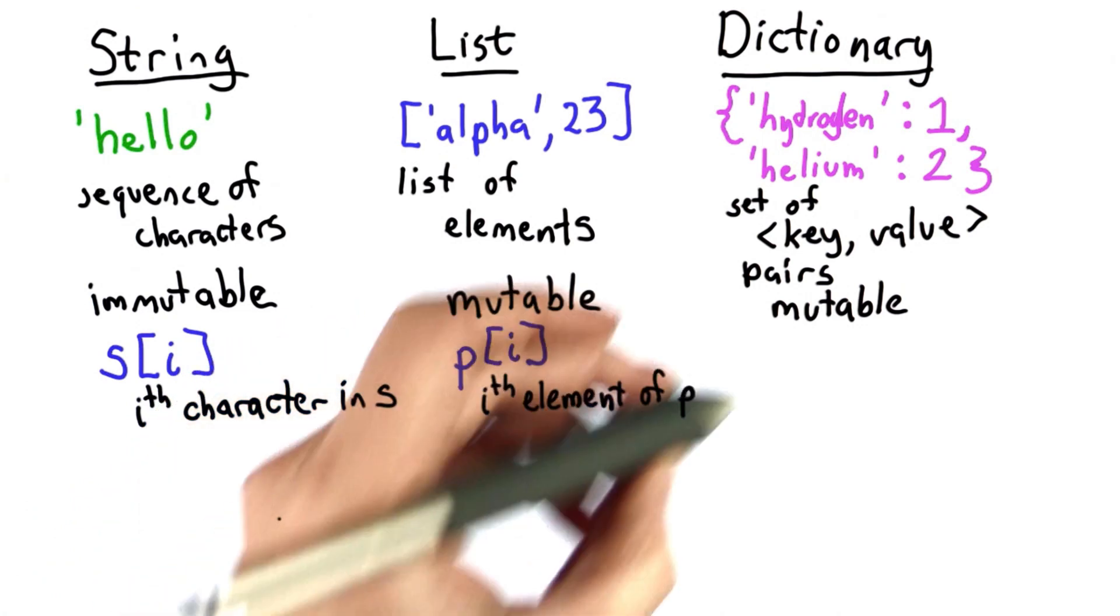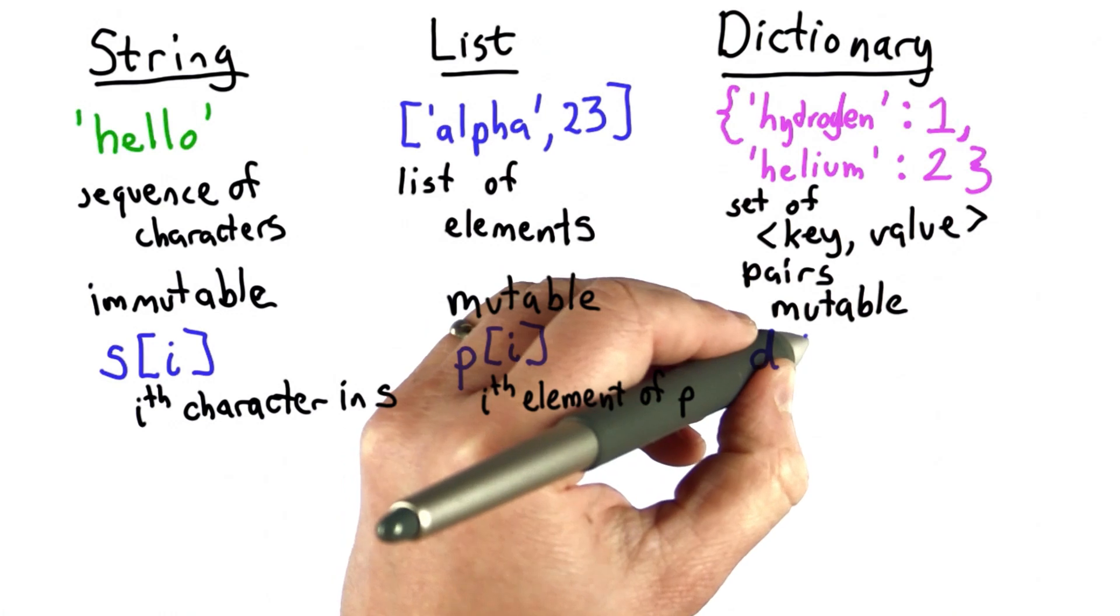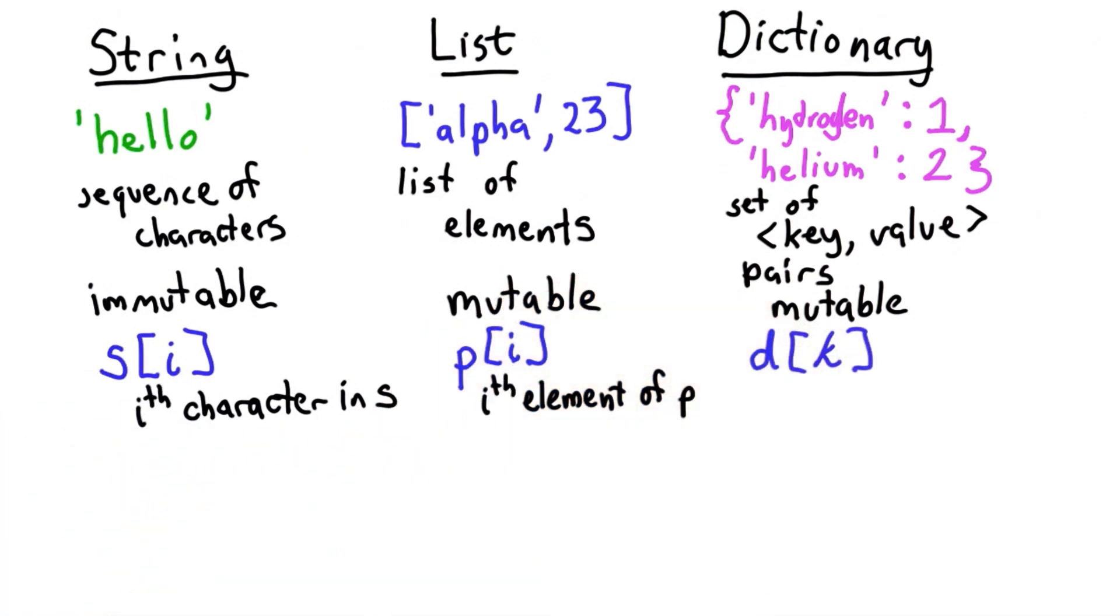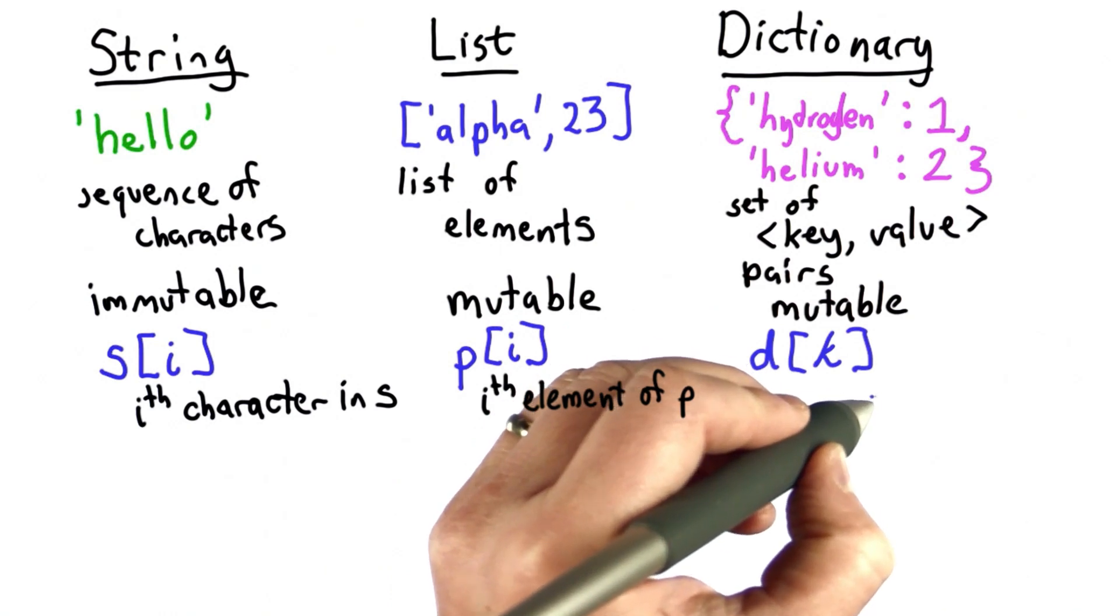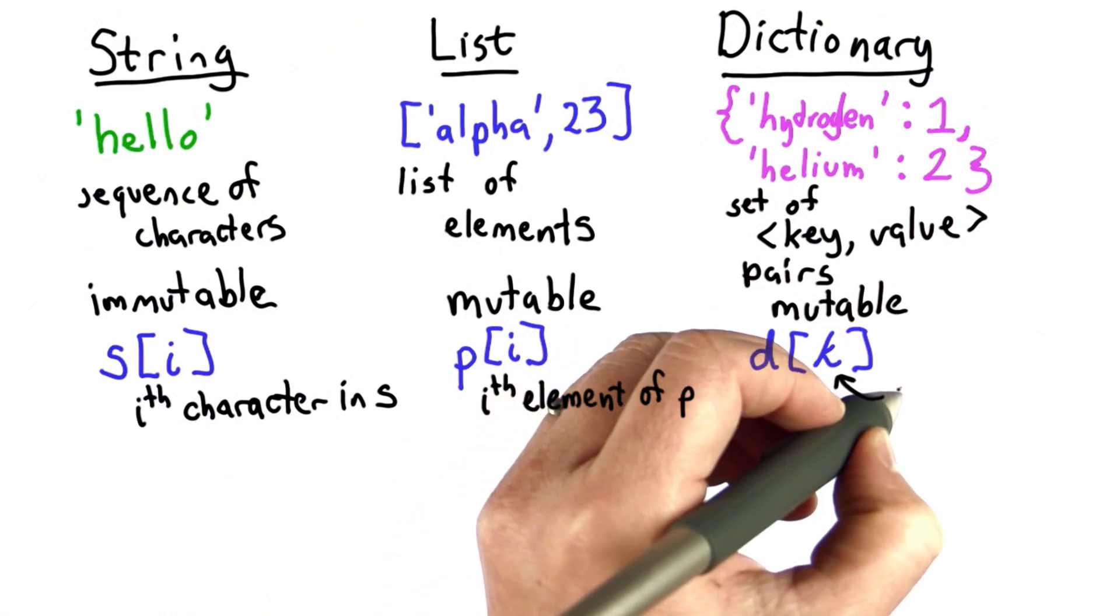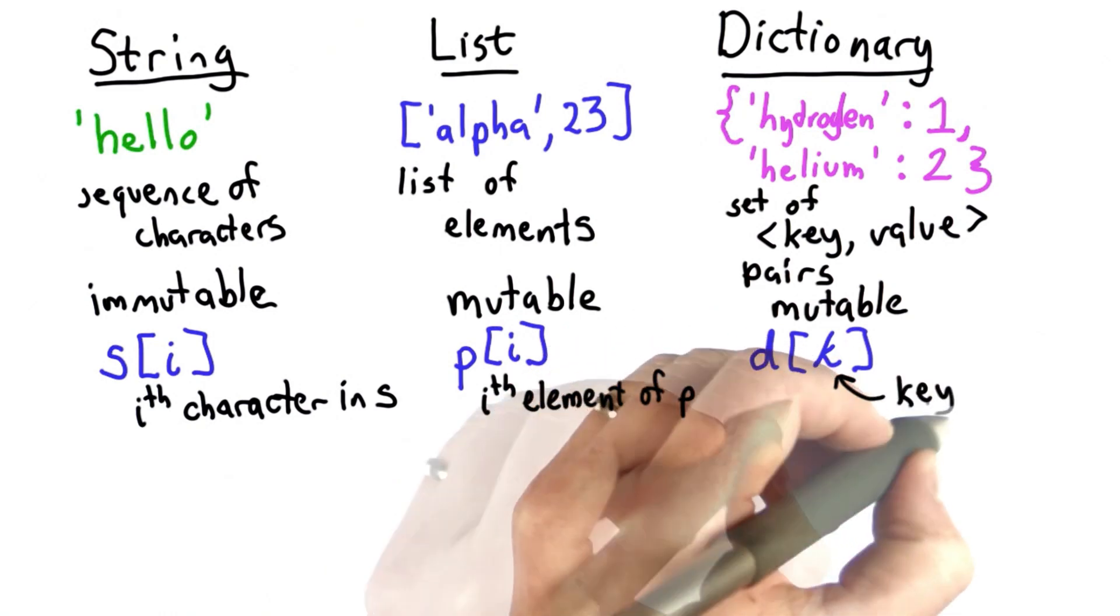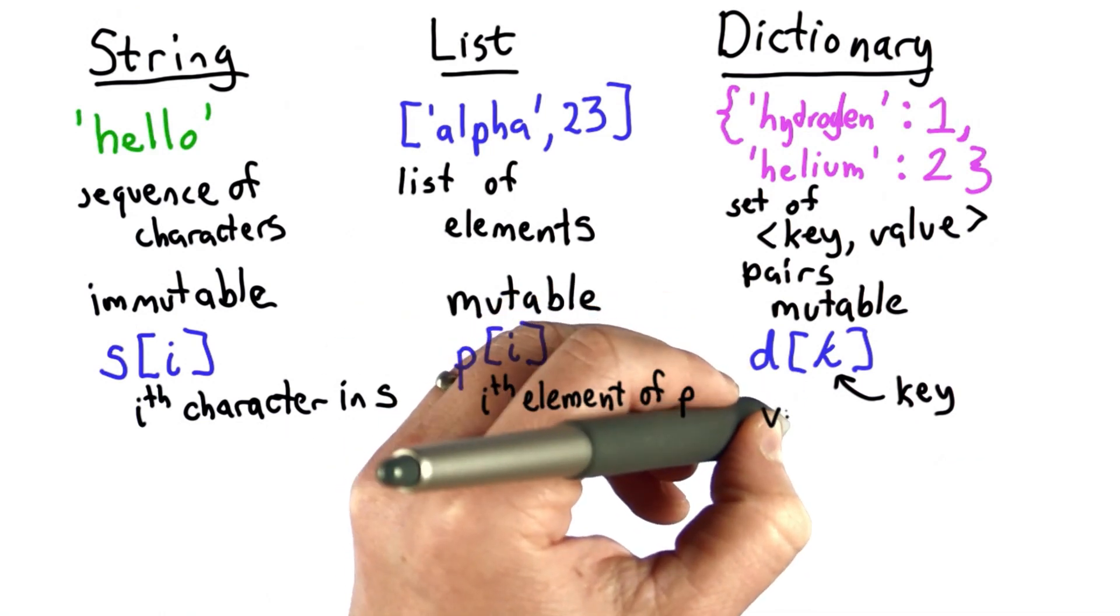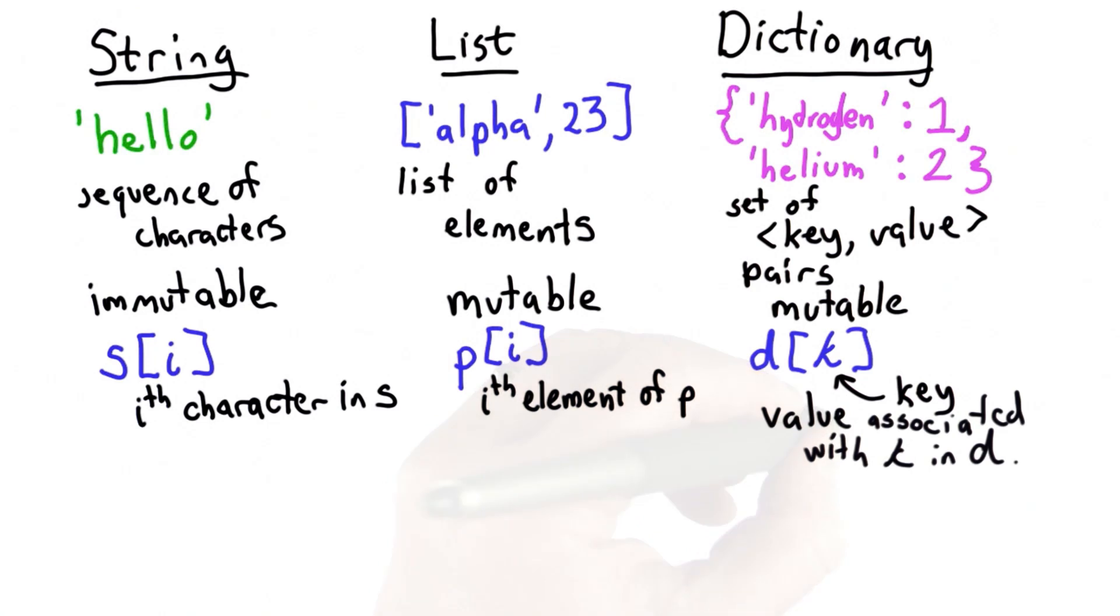With dictionaries, it's a little bit different. The syntax is the same. We can do d index k. With both strings and lists, these were numbers. Here the k is whatever the key value is. So this is a key in the dictionary. What d index k will give us the value associated with that key in the dictionary. We'll see some examples soon.